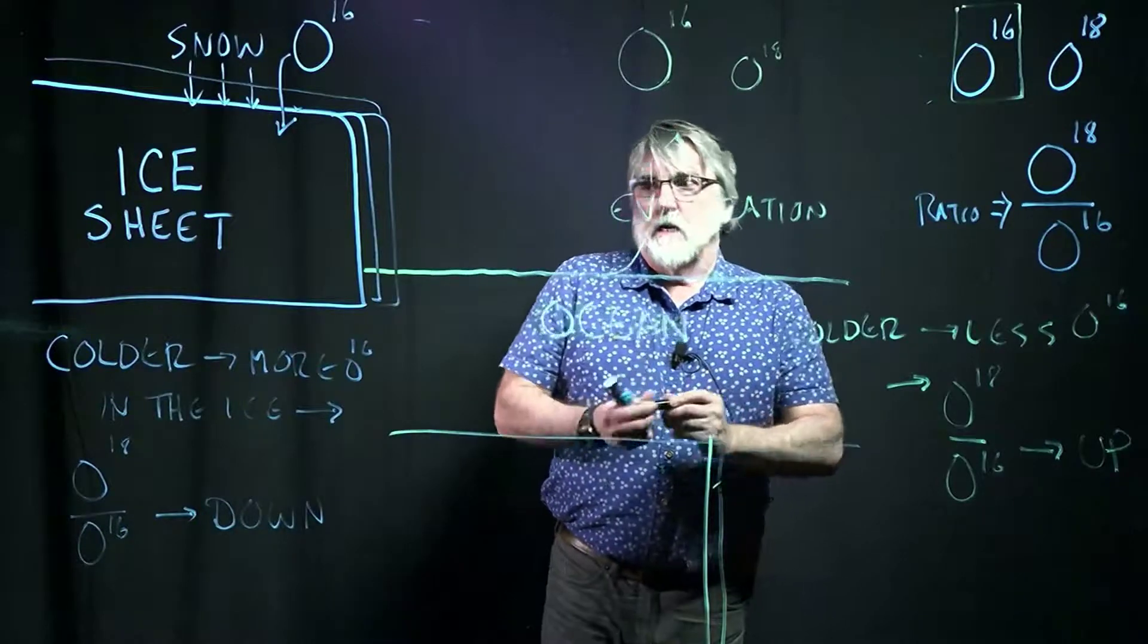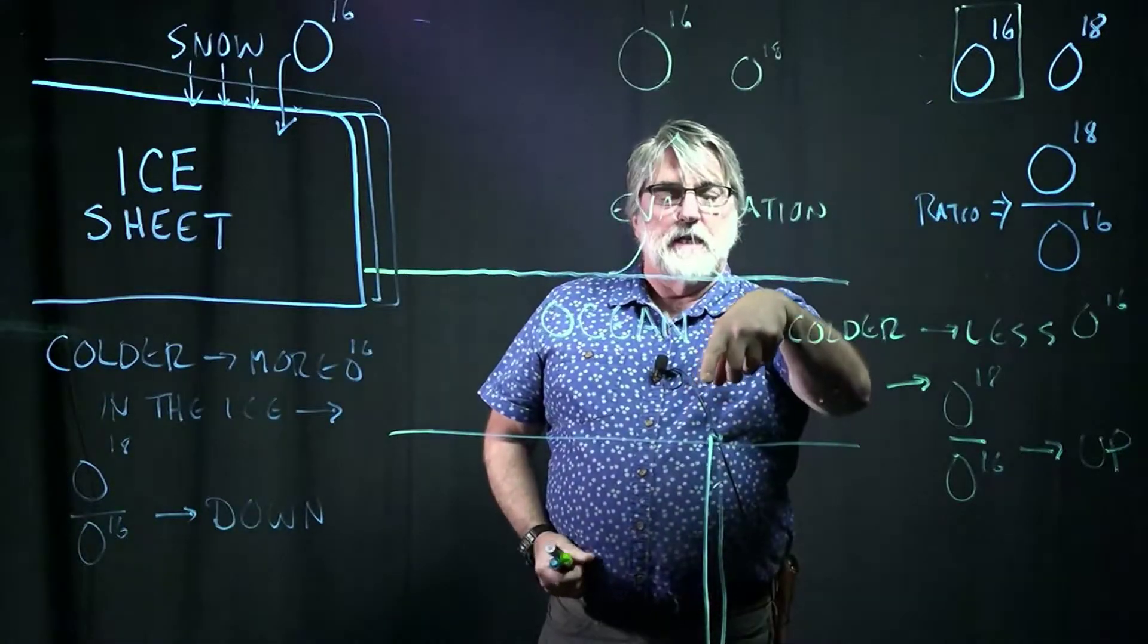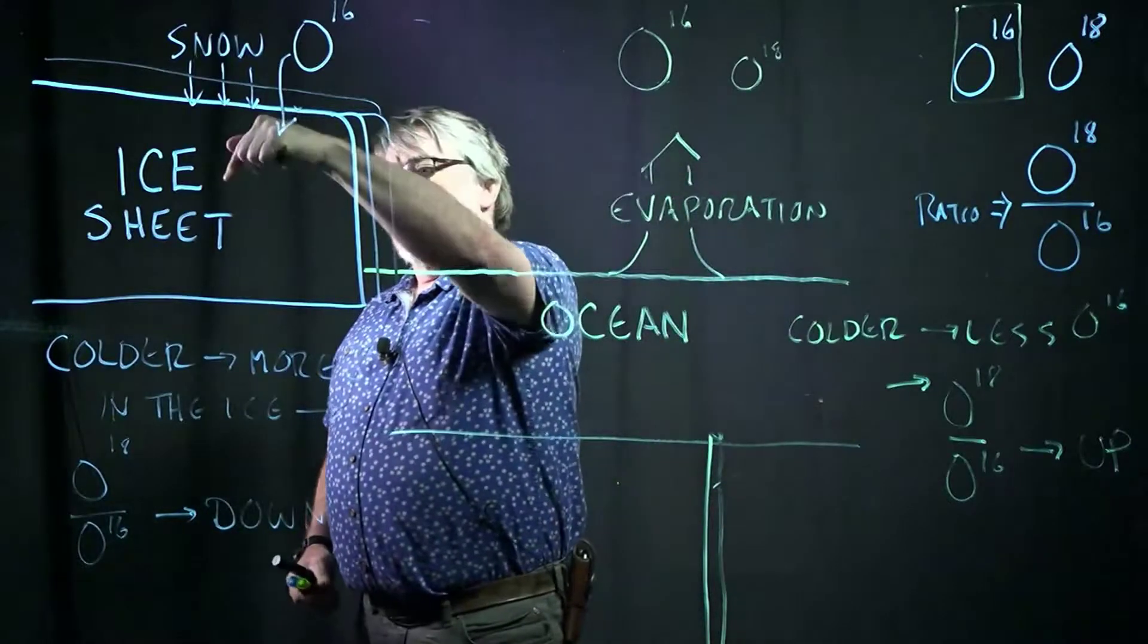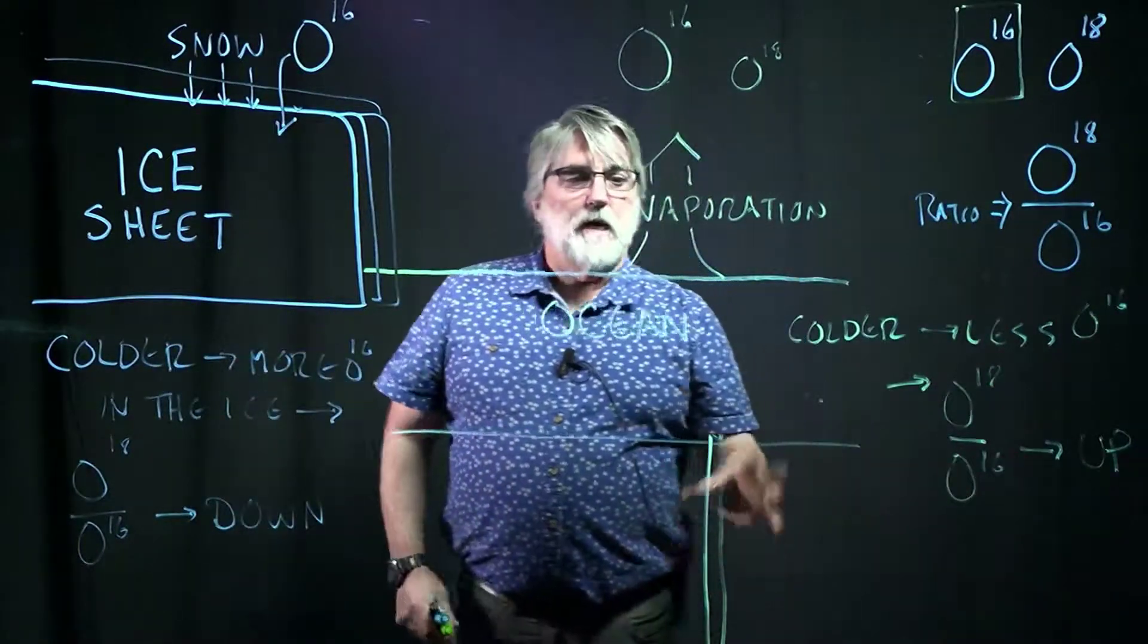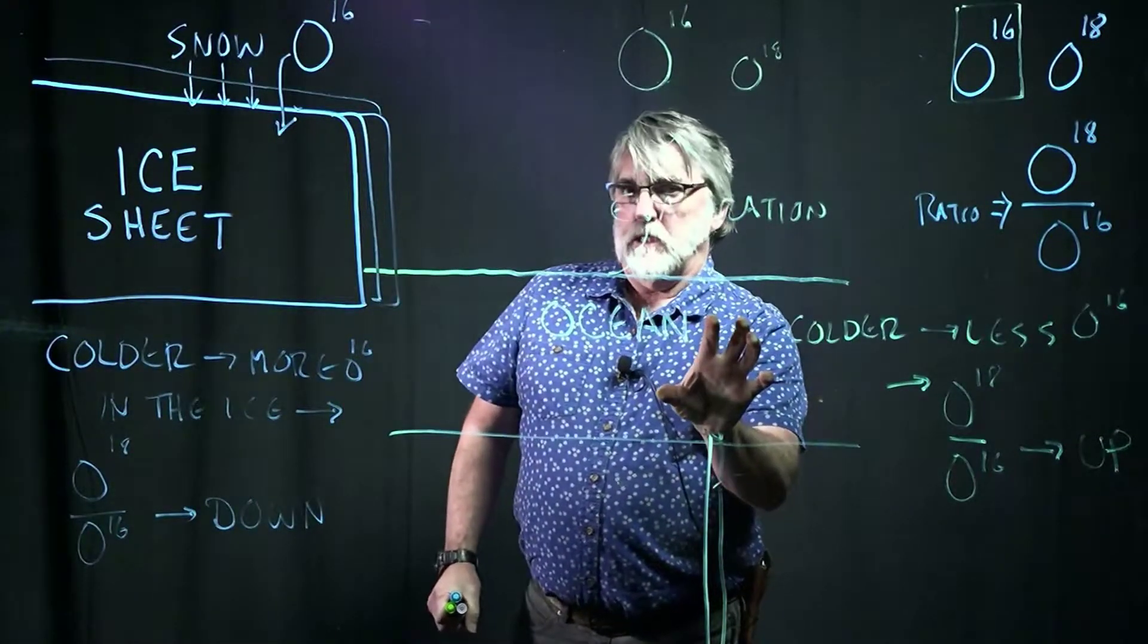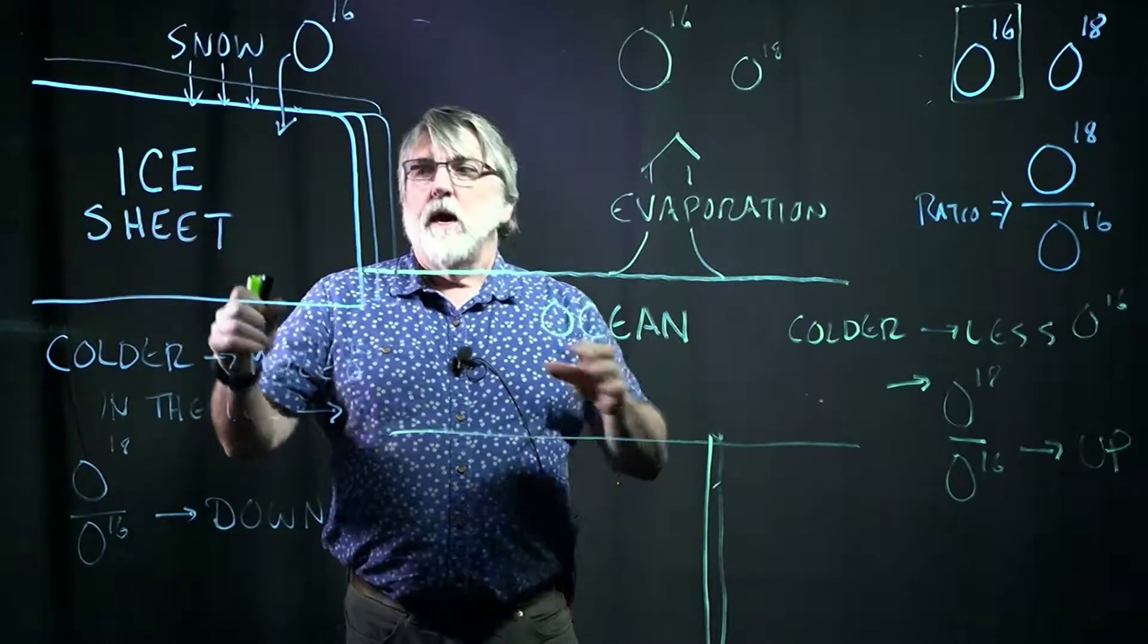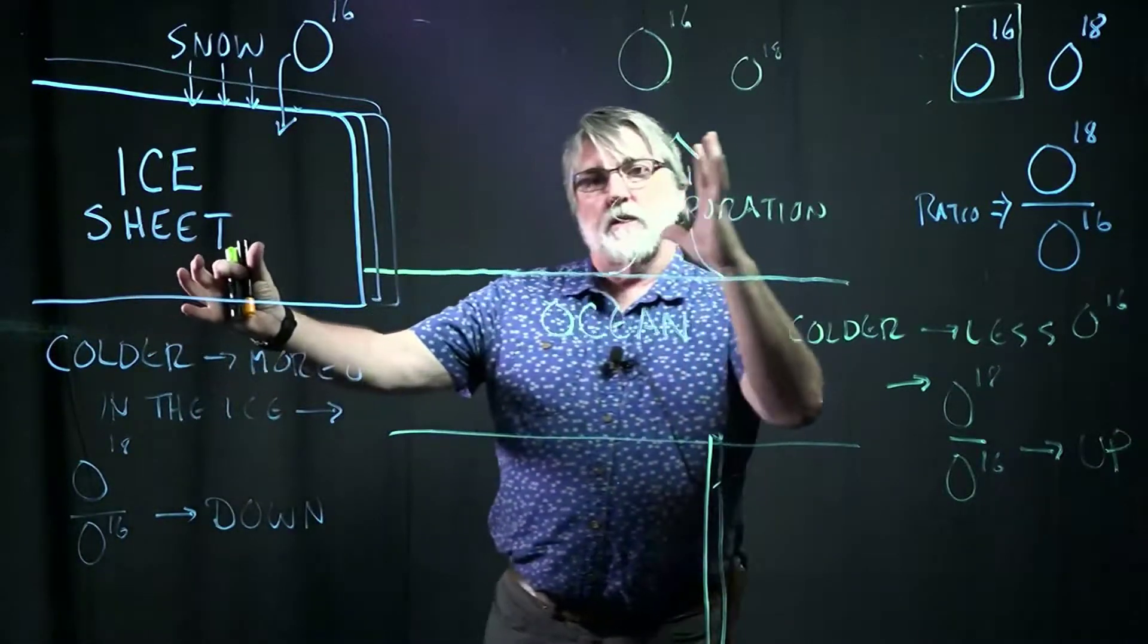So what's happening here is when the ice is growing, we're taking O16 out of the oceans and putting it into the ice, and it's changing the ratios. So if I can measure the O18 to O16 ratio here somehow, and if I can measure that ratio here through time, I'm measuring when the ice sheets are getting bigger, when the climate is colder.